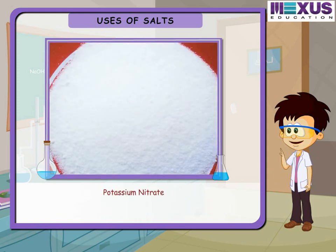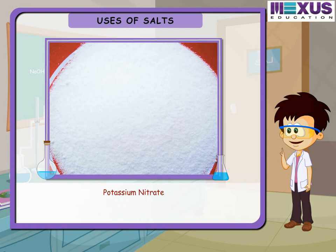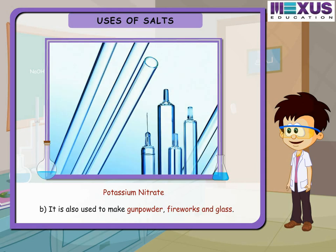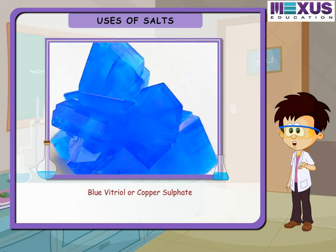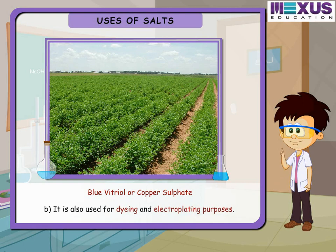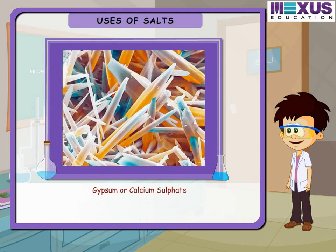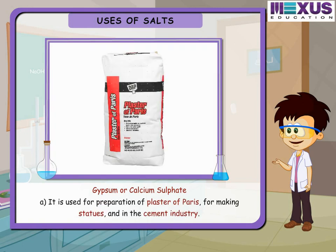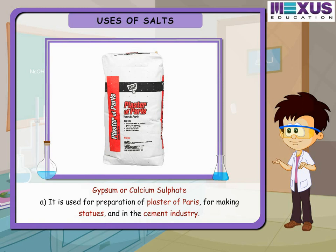Potassium nitrate is an important fertilizer and is also used to make gunpowder, fireworks, and glass. Blue vitriol, or copper sulfate, is used as a fungicide in agriculture and also for dyeing and electroplating purposes.